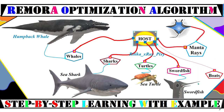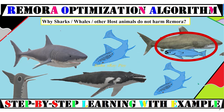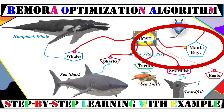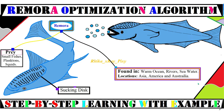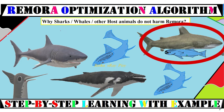Since the remora fish is often in contact with whales, sharks, and other host animals, the question is: why do sharks, whales, and other host animals not harm remora when they could easily do so? By nature, remora do not harm their host — they are not dangerous to their host. Even humans use them to capture big fishes and sea turtles. Remora have no swimming bladder, so for traveling in the water they use their suction disc, attaching to the host body and moving as the host travels.